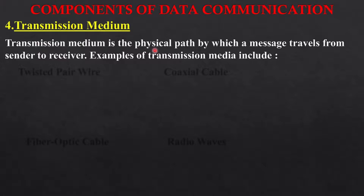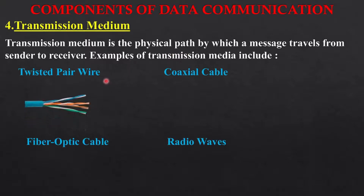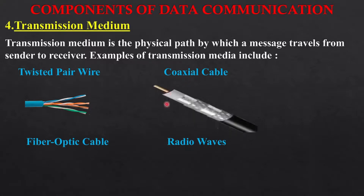The fourth component of data communication is transmission medium. Transmission medium is the physical path by which a message travels from sender to receiver — the physical path used by devices to send data from one device to another. Examples of transmission media include twisted pair cable, which is used in telephones, and coaxial cable, which is used in cable television.